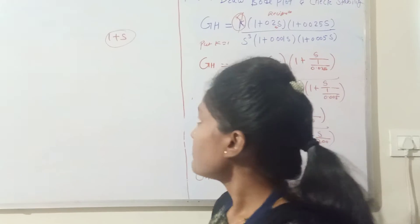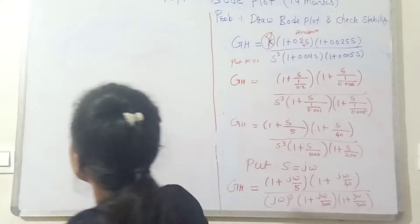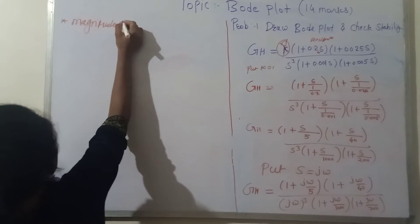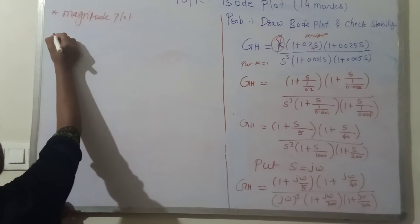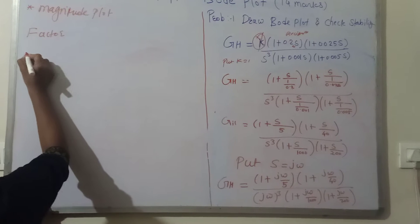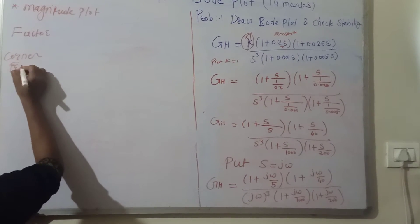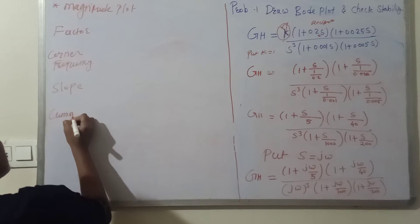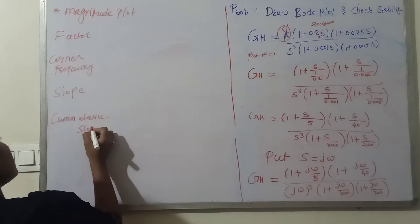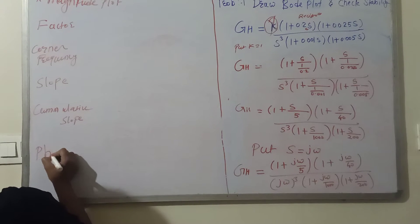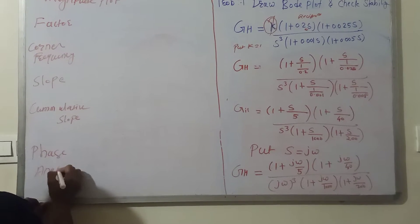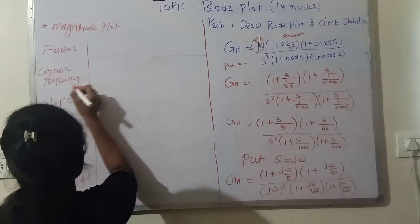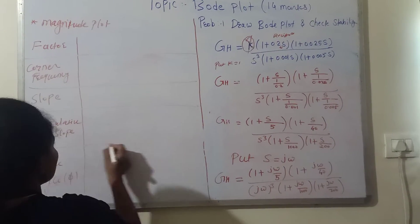For the magnitude plot calculations, we make a table. The table has columns for: factor, corner frequency, slope, cumulative slope, and phase angle denoted by phi. Let me show you how to fill this tabular form.